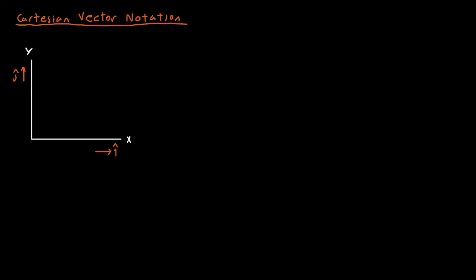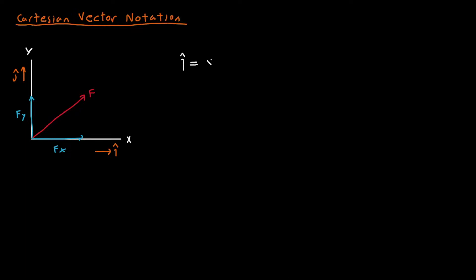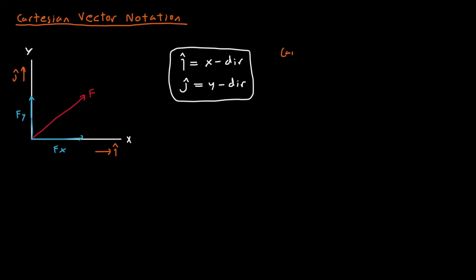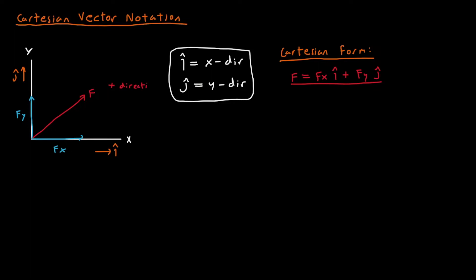Since we're dealing with forces, let's say there's a diagonal force F in the x-y plane. This force will have an x component and a y component. Remember, i corresponds to the x direction and j to the y direction. To write the force in Cartesian form, F equals Fx i-hat plus Fy j-hat. From the sketch, the force is in the positive x and y directions, so this Cartesian form remains positive.